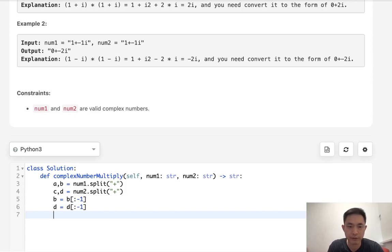So now that we have the numbers, what we'll do is generate the values that we need. This will be int of a times int of c. So that's the real part. And the y part is going to be what we subtract also here. This will be int of b times int of d.